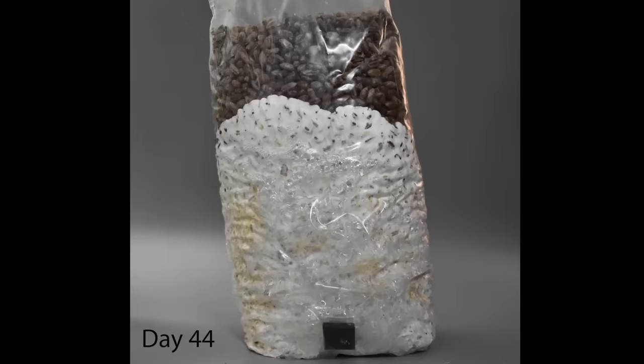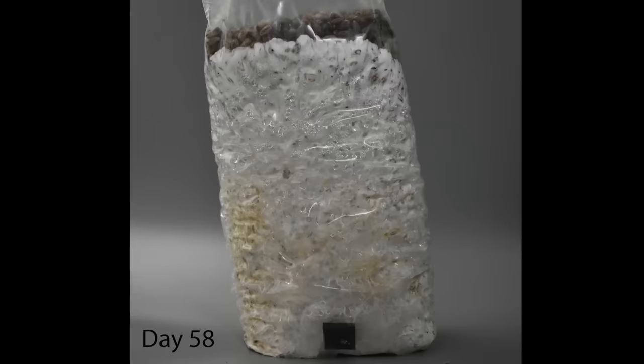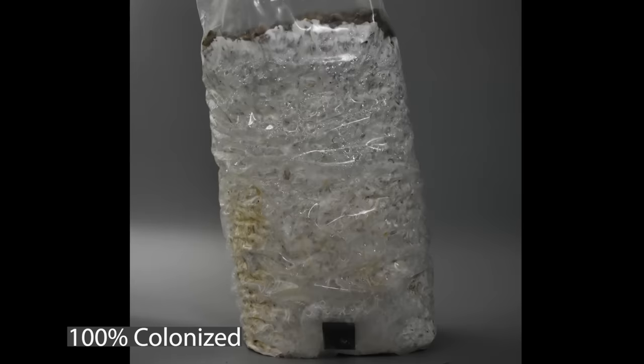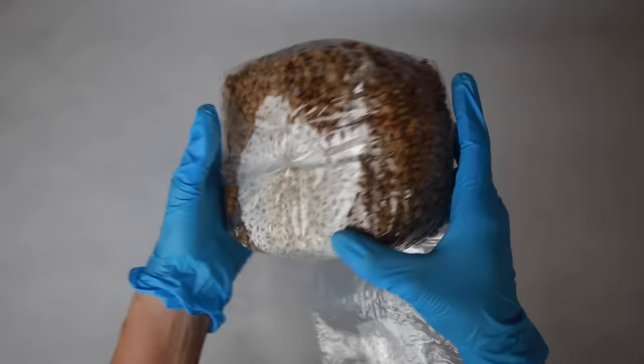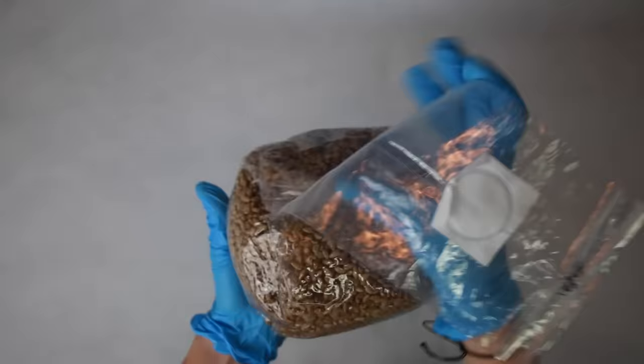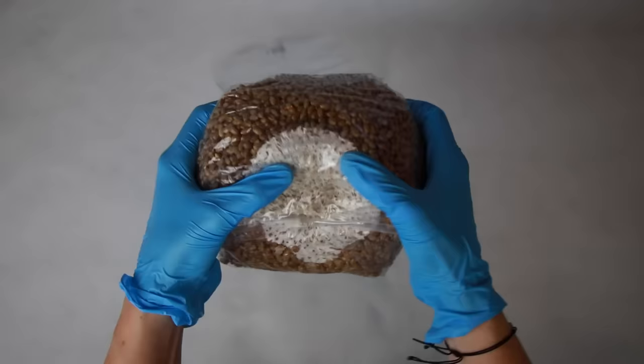A spawn bag will usually colonize in about 15 to 30 days. This bag took more than 60 days to colonize. In order to shorten your colonization time, it's best practice to mix the bag when it's about 10 to 30% colonized. This will normally cut your colonization time in half.